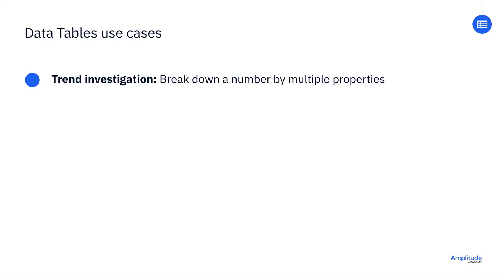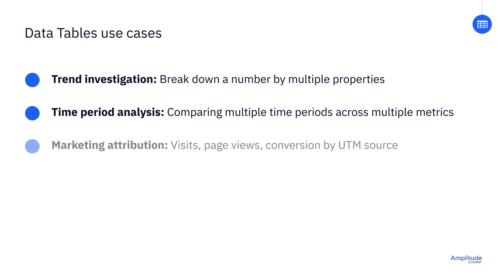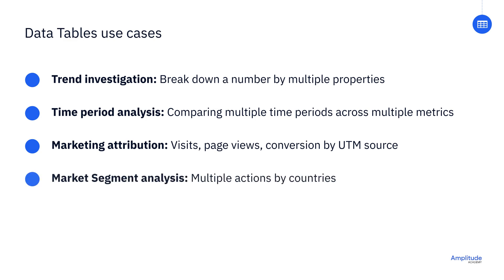Some common use cases might be trend investigation, where you can quickly and easily break down a number by multiple properties. Comparing time periods across multiple metrics — so you could have metric A, metric B, and metric C broken down by category, and then compared to last quarter. Marketing attribution, where you're measuring total visits, page views, and conversion rate broken out by UTM source. Or market segment analysis, where you're comparing several actions broken down by country.